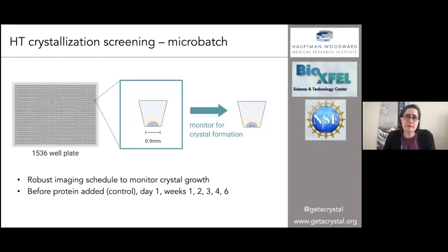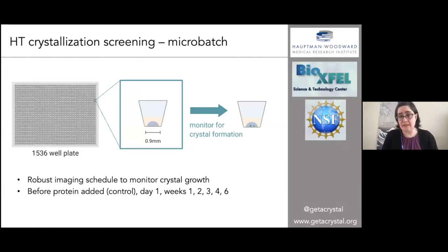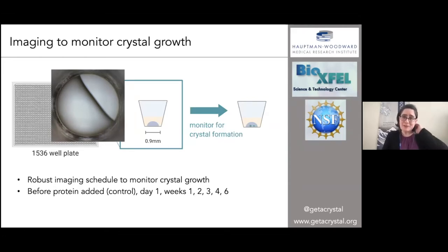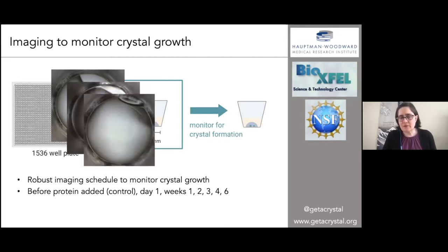For high-throughput screening, we use microbatch under oil. The reason is that it enables us to use very little crystallization condition and cocktail. We have a layer of oil in each well, then put the crystallization cocktail at the bottom, and add the protein on top of that. We spin it down and then monitor for about six weeks to see what happens. We always image before adding the protein solution as a negative control, so that if crystals form before you've added your protein, you know those are salt crystals from the crystallization conditions.